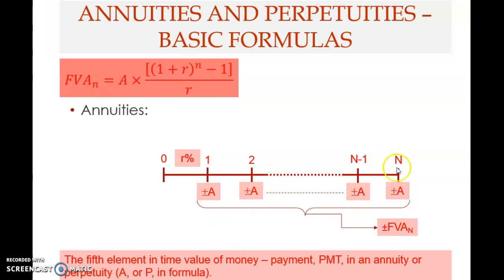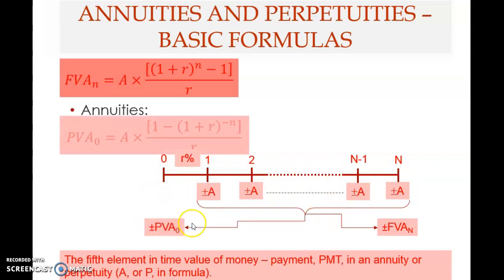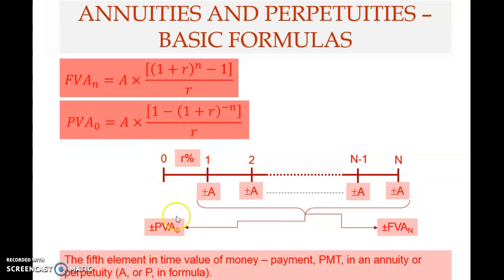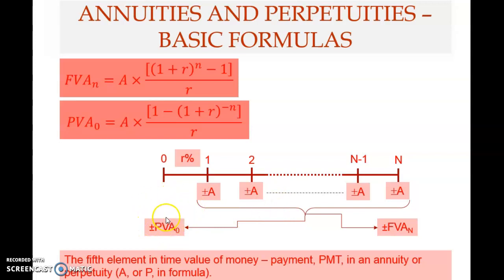If you want to determine the value of all these cash flows at an earlier time — at time zero — this is called the present value of annuity. Note that this present value occurs one period before the first payment. This is a crucial point to remember.